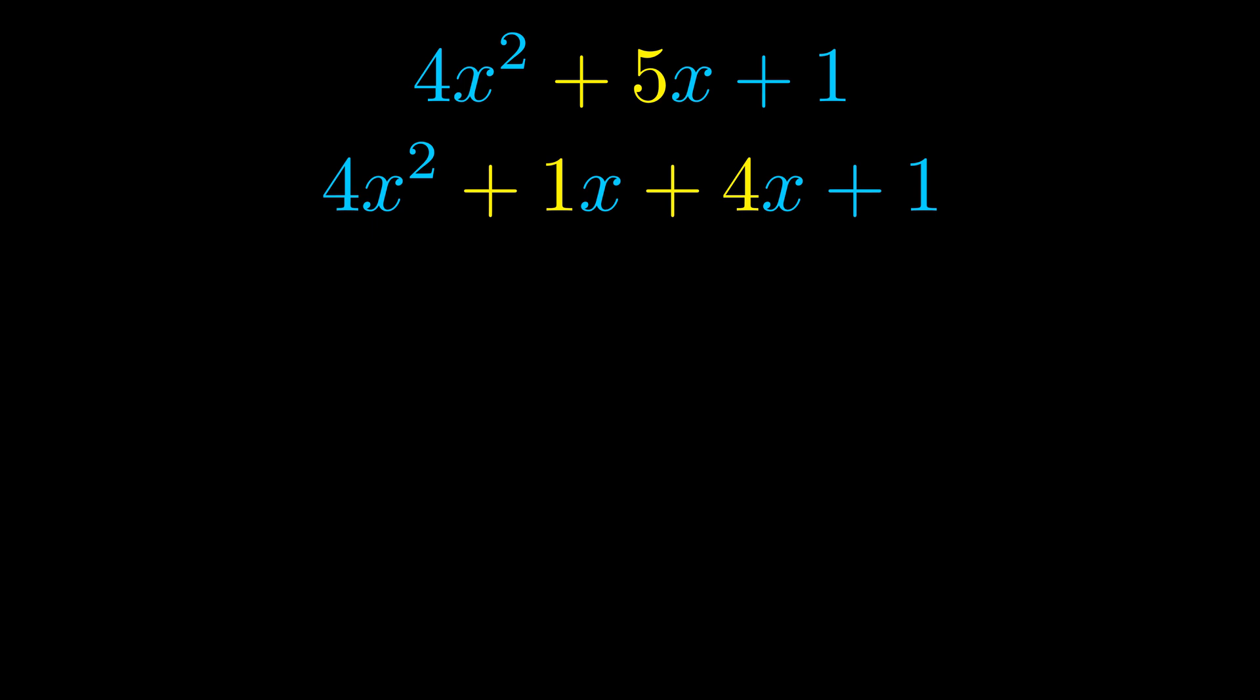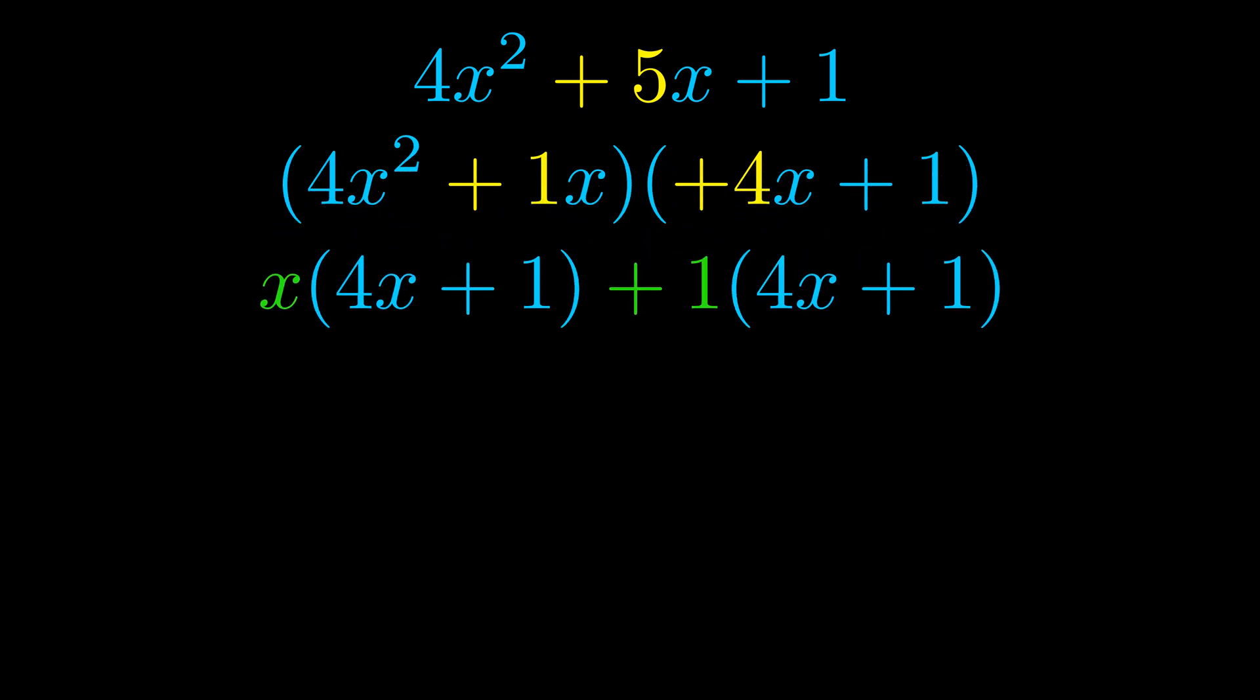Once we've done this we go ahead and we put parentheses around the first term and the last term. And we do that so that we can take the greatest common factor out of both terms. We can see the greatest common factor is now outside in green.